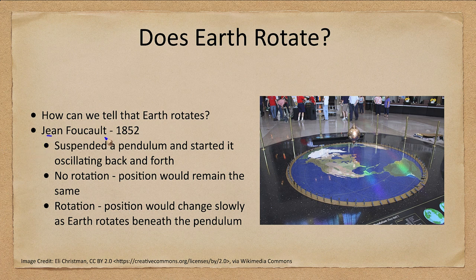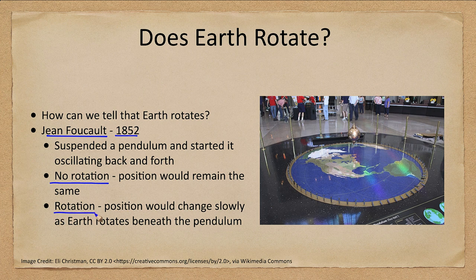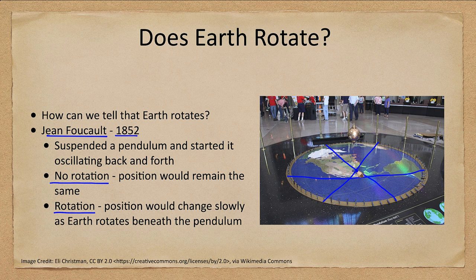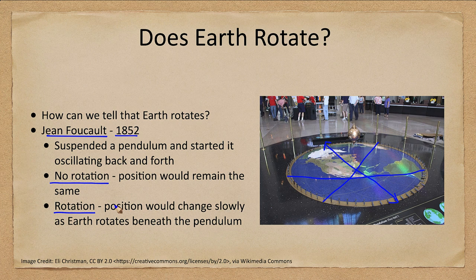Jean Foucault gave us a pendulum in 1852 — a pendulum with a bob at the bottom and a string going all the way up to the ceiling, oscillating back and forth. This is a great example of the scientific method making a prediction: if the Earth is rotating, the plane of the pendulum's swing will slowly change as the Earth rotates beneath it. So if it starts going back and forth in one direction, that direction would slowly shift over time. The central point remains the same, but the direction of swing changes. If there were no rotation, it would just keep swinging in the same direction. Doing this experiment confirms that yes, the Earth is indeed rotating underneath the pendulum.